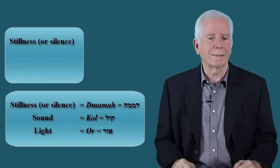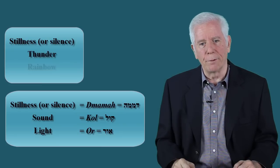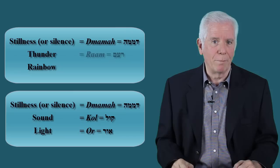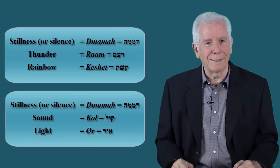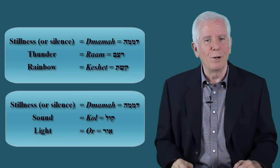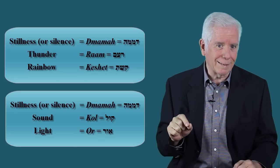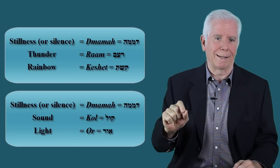Stillness, silence, thunder, rainbow, in Hebrew demama, ram, keshet. Surprisingly, demama in Hebrew means both lack of movement, standstill, but also silence.